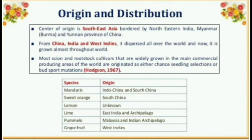Origin and Distribution: The centre of origin is Southeast Asia bordered by Northeastern India, Myanmar and Yunnan province of China. From China, India and West Indies, it dispersed all over the world and is now grown almost throughout the world. Most scion and rootstock cultivars widely grown in the main commercial producing areas of the world originated as either chance seedling selections or budspot mutations.